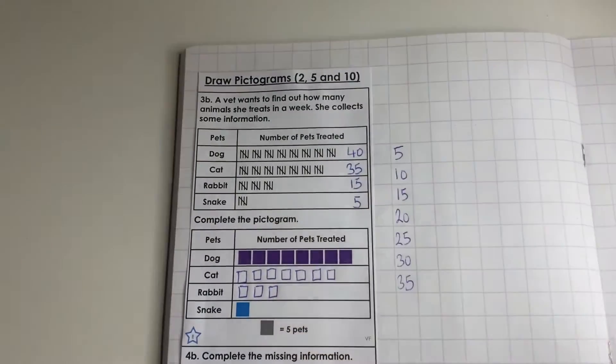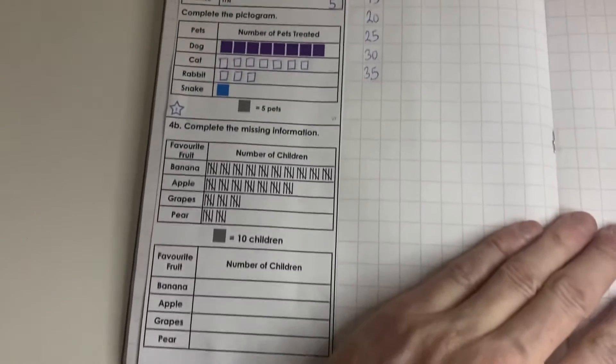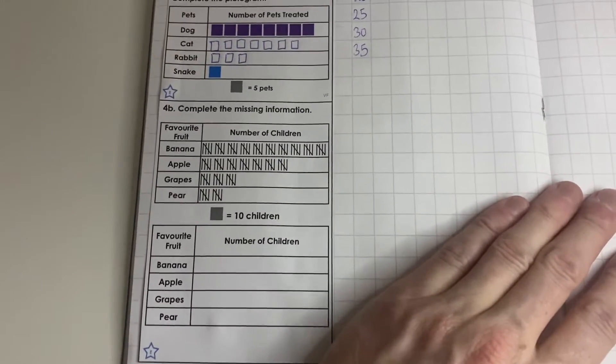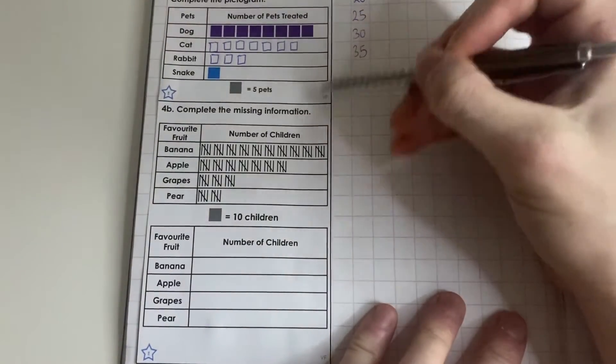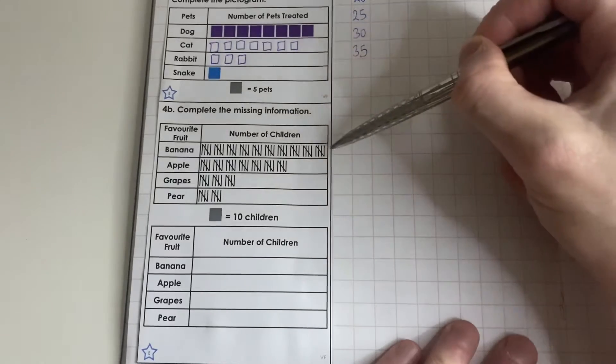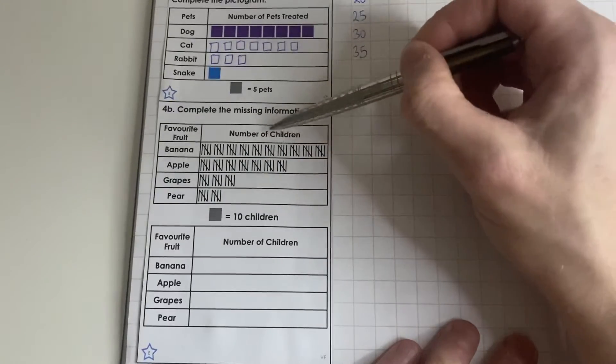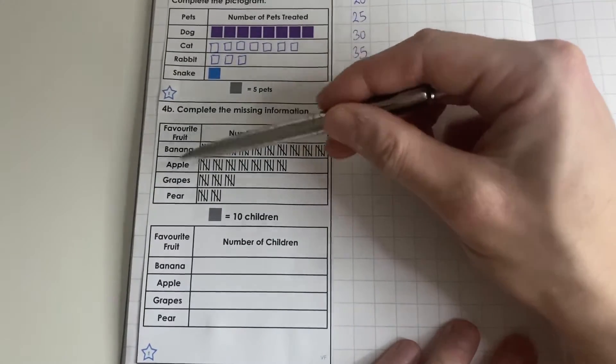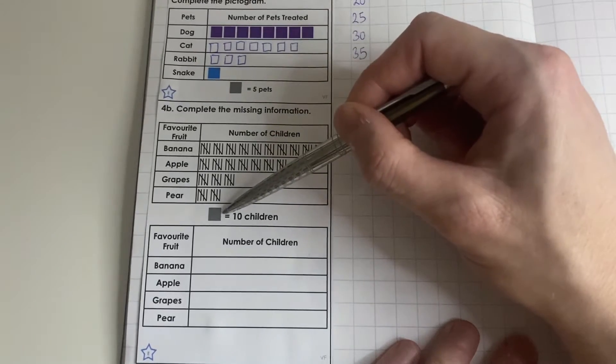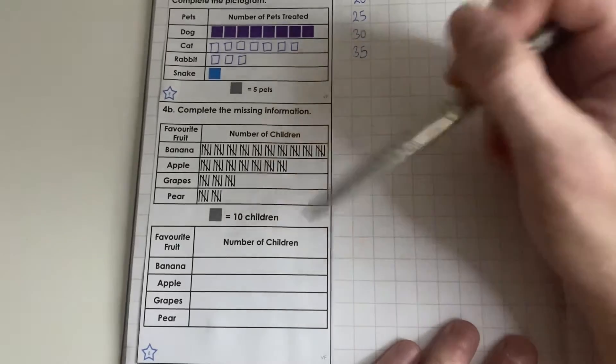We'll have another go at doing this next one which is a little bit different. Complete the missing information. We've got our table here which is using tally charts to represent how many children preferred these four fruits as their favorite. If we look at our key, each square in our pictogram is going to be equal to 10 children.